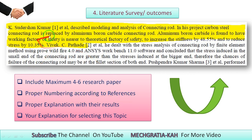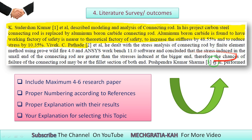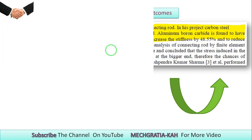In the literature survey, provide proper numbering according to references. For each reference, give a proper explanation with their results — what results they found in their research paper. You should explain which work you followed and your reasoning for selecting this topic. After the literature survey, you should explain what gaps the researchers have not addressed, and that justifies your own research.